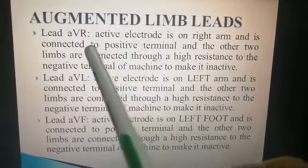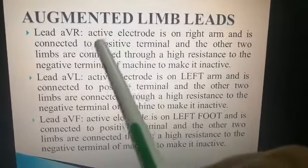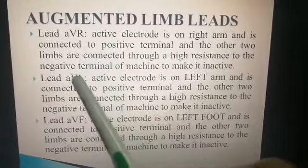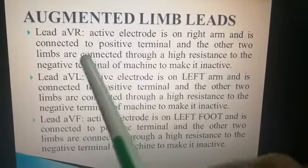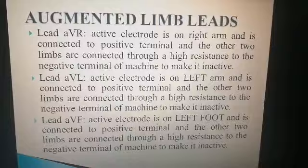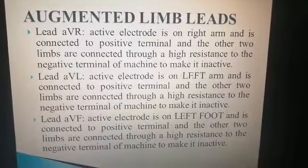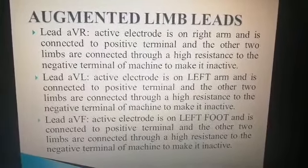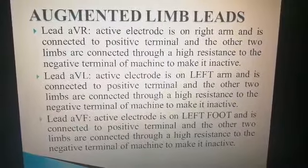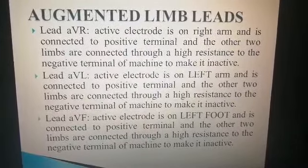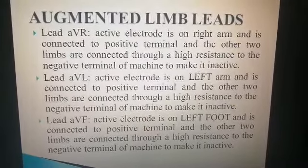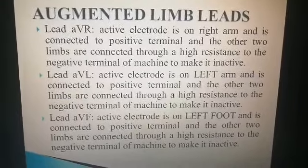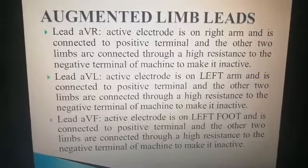So in AVR, AVL, and AVF, you must understand which electrode is the active or positive electrode, and the other two limbs are the negative terminals. These are the augmented limb leads.